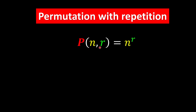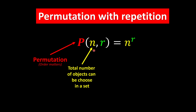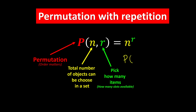For the notation, we write it as P(N, R), where P is permutation (order matters), N is the number of available choices, and R is how many items we pick. For the passcode example, N is 10 and R is 4, so P(10, 4) = 10 to the power of 4, which is 10,000.